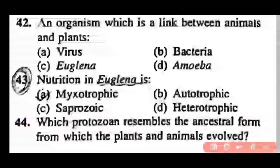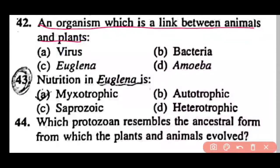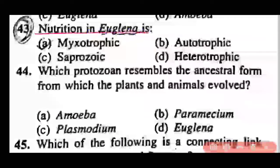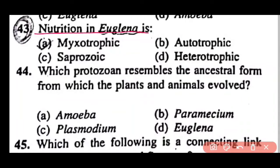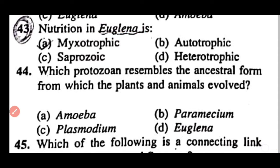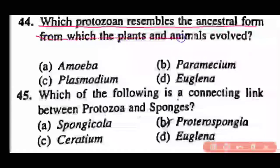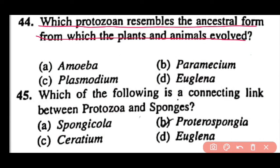Question 41: Which photosynthetic protozoan depicts characteristics of both plants and animals — Entamoeba, Paramecium, Monocystis, or Volvox? Correct answer is option D. Volvox has characteristics of both plants and animals. Question 42: An organism which is a linking form between animals and plants is virus, bacteria, Euglena, or Amoeba? Correct answer is option C. Euglena is a connecting link between animals and plants. Question 43: Nutrition in Euglena is mixotrophic, autotrophic, saprozoic, or heterotrophic? Correct answer is option A. Mixotrophic — it feeds on different sources of energy and carbon.